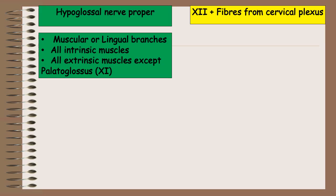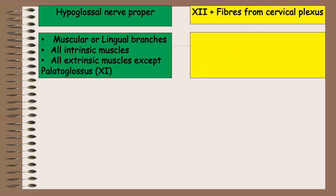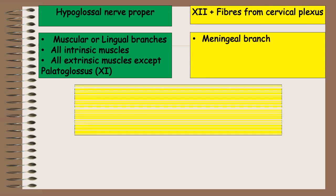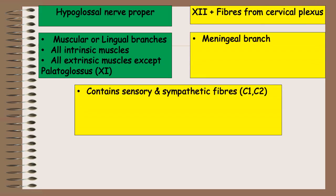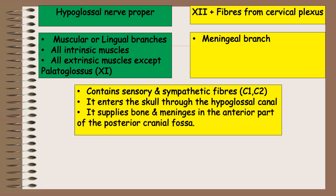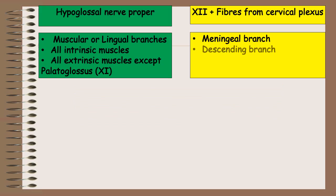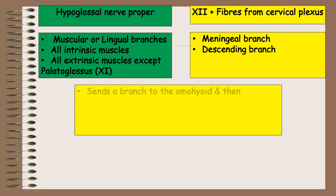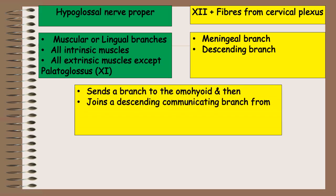The fibers from the cervical plexus traveling through the hypoglossal nerve give different branches. The first is the meningeal branch, which contains sensory and sympathetic fibers. It enters the skull through the hypoglossal canal and supplies the bone and meninges in the anterior part of the posterior cranial fossa.